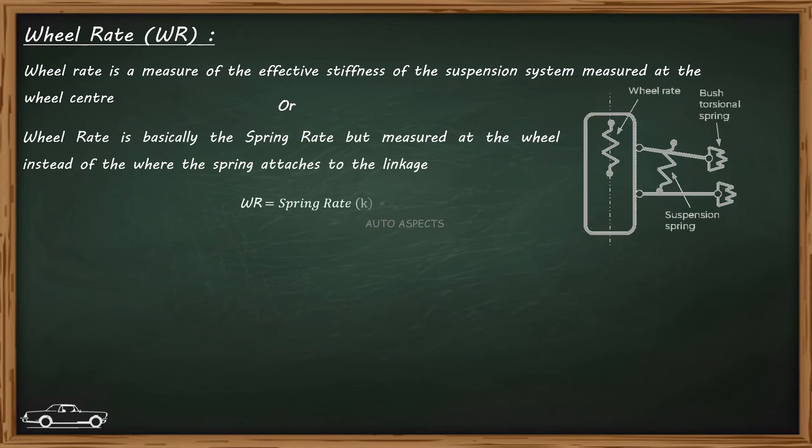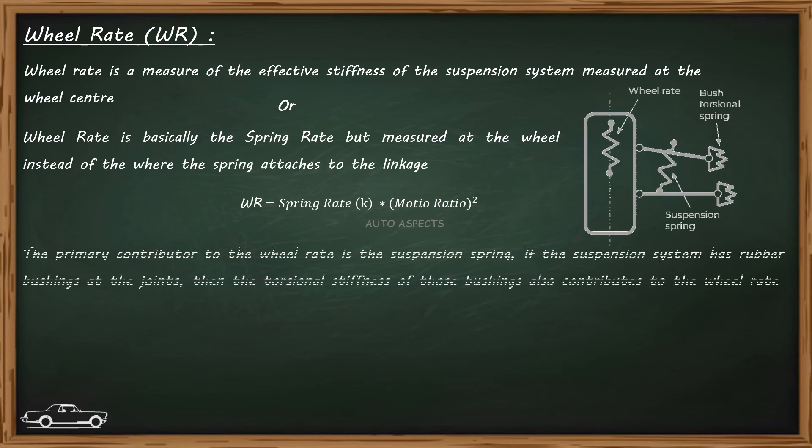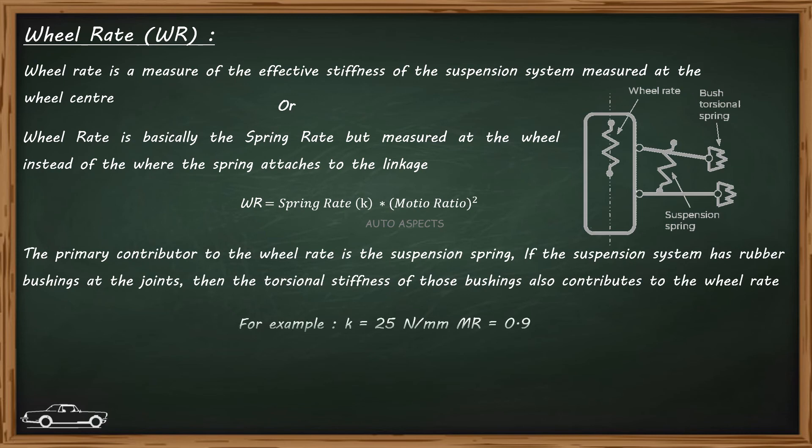Wheel rate is equal to spring rate into motion ratio squared. Here the primary contributor to the wheel rate is spring. If the suspension system has rubber bushings, then bushing stiffness is also considered in evaluating the wheel rate.